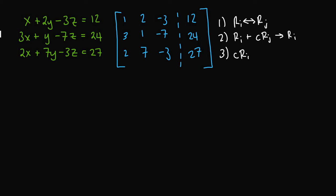Welcome back. In this part, we're going to go ahead and start performing elementary row operations on the augmented matrix that we developed in the previous video, and try to reduce it — convert it into an equivalent matrix that is in reduced row echelon form.